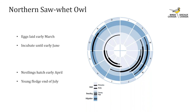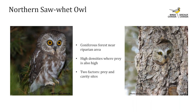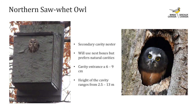Saw-whet owls begin laying eggs in early March and incubation ends early June; nestlings begin hatching in early April and fledglings will have left the nest by the end of July. They breed in nearly any forest type but more often occupy coniferous forest near riparian areas. They are secondary cavity nesters that most commonly occupy cavities excavated by pileated woodpeckers and northern flickers. They will accept nest boxes but prefer natural cavities. The cavity entrance ranges from 6 to 9 cm and the average height is 2.5 to 13 meters.